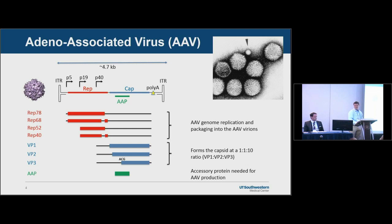AAV has, as with most viruses, a very compact, efficient genome. It's a single-stranded genome. It has inverted terminal repeats on either side and three promoters that can drive expression. It has multiple open reading frames, but you basically have two open reading frames that can encode different forms of rep — the protein involved with AAV genome replication and packaging into the capsid.